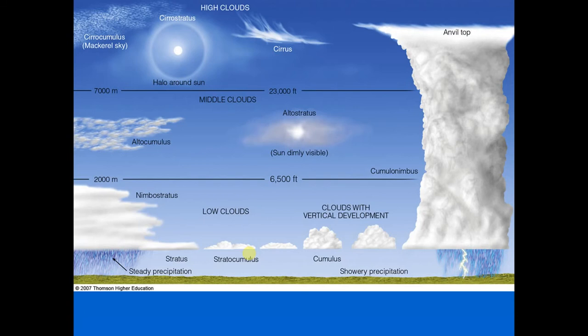Harmless-looking cumulus clouds can develop on warm summer humid mornings. By afternoon they may grow into cumulus congestus, extending into the middle cloud region. By late afternoon or early evening you might have a cumulonimbus cloud — the thunderstorm cloud — whose dark base may be no more than a couple thousand feet above the surface while its top may extend to near the top of the troposphere, 35,000 to 40,000 feet high.